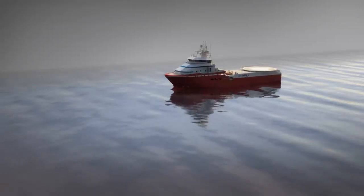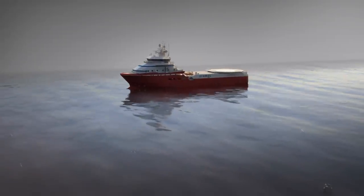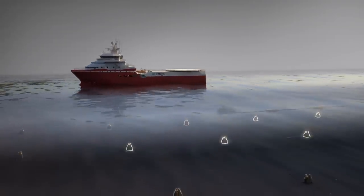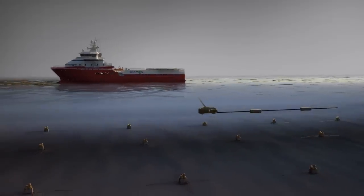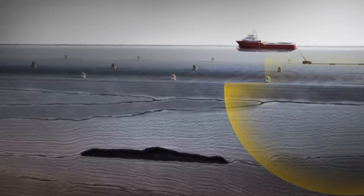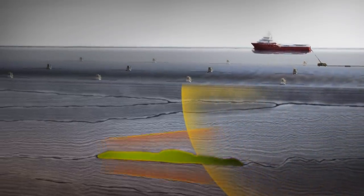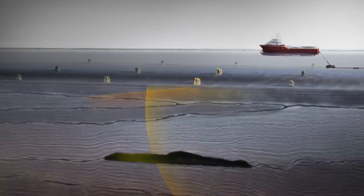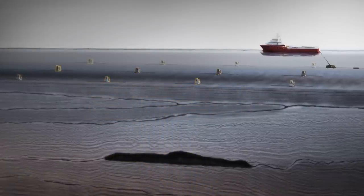A high-power source of EM energy is towed over a grid of receivers, placed 1 to 3 km apart, at known locations on the seabed. By measuring the refracted energy from subsurface layers, we are able to identify areas of high electrical resistivity, an indicator of hydrocarbons.